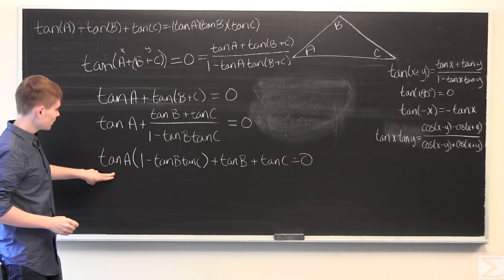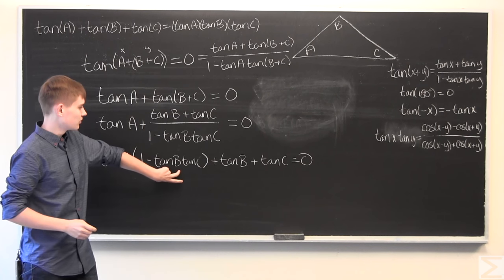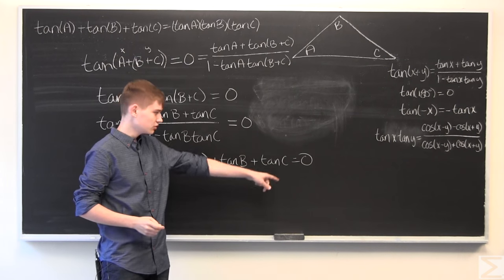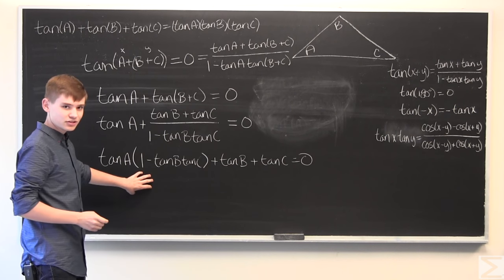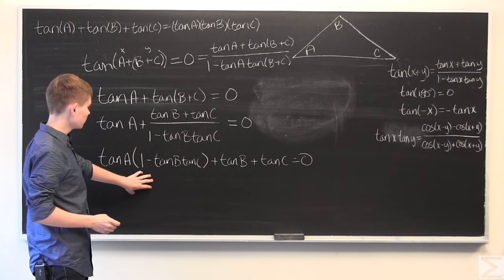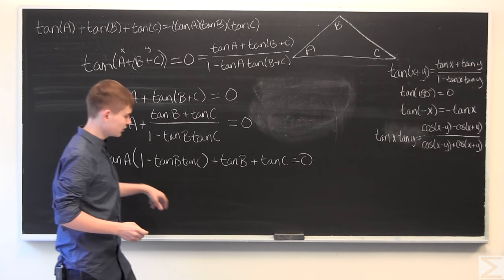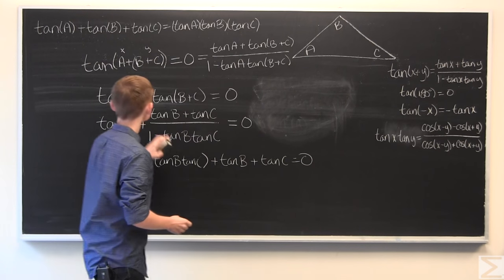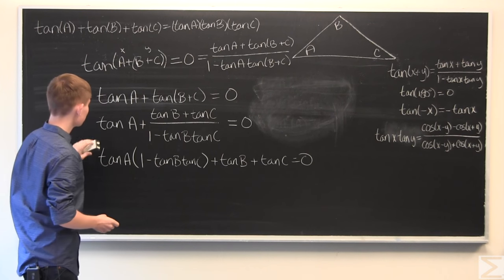So, what we have is tangent A times the denominator plus tangent B plus tangent C is equal to zero. Hopefully, you're seeing what's happening, and I will keep simplifying until we get this, which is what we're looking for.